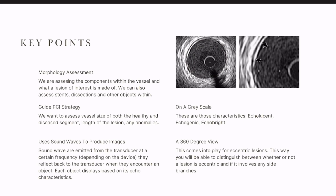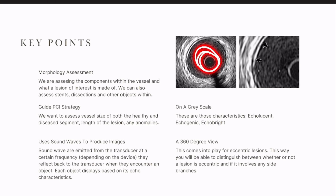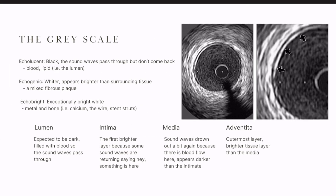This is super great for eccentric lesions. If a lesion is eccentric — not 360 degrees around the vessel — this is what you're looking at. You can match that on angiography and confirm you did see an eccentric lesion. Certain intervention therapies are better suited for eccentric lesions than concentric lesions that are 360 degrees around the vessel, which goes back to PCI strategy.